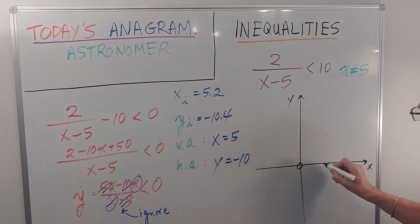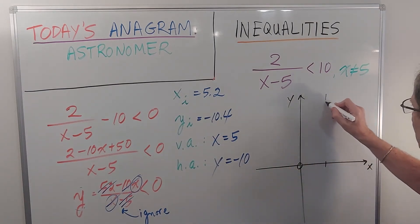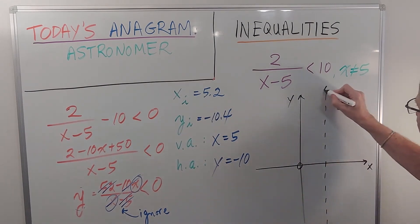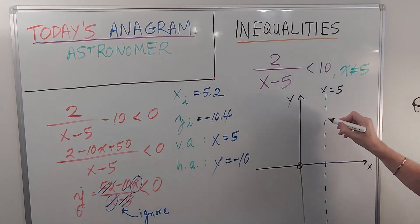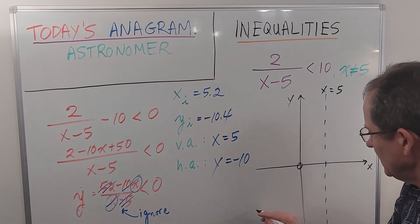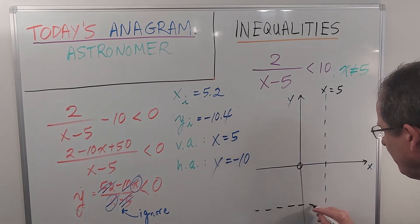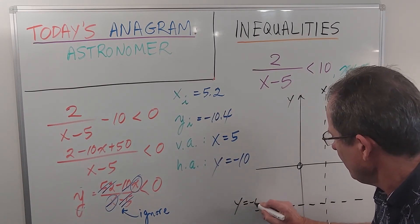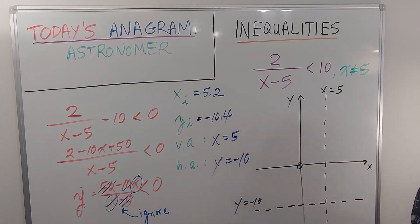The vertical asymptote is x equals 5. The graph cannot cross that line. It doesn't exist along that line. The horizontal asymptote is y equals negative 10. So the graph will level off at that height.